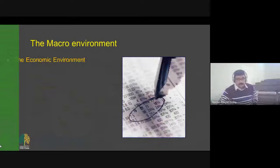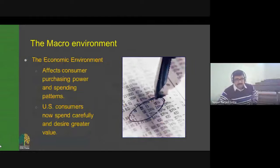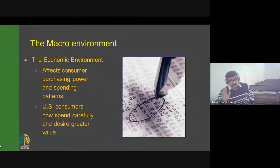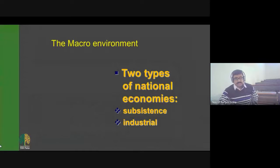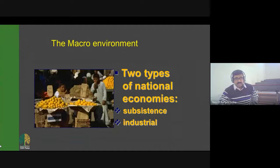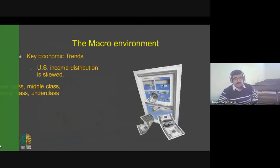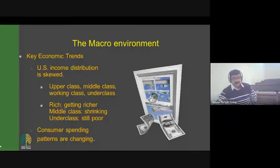The economic environment affects consumer purchasing power and spending patterns. US customers now spend carefully and desire greater value. The two types of national income are subsistence and industrial economies. US income is distributed across upper class, middle class, working class, and underclass — with the rich getting richer, the middle class shrinking, and the underclass remaining poor. Consumer spending patterns are changing.